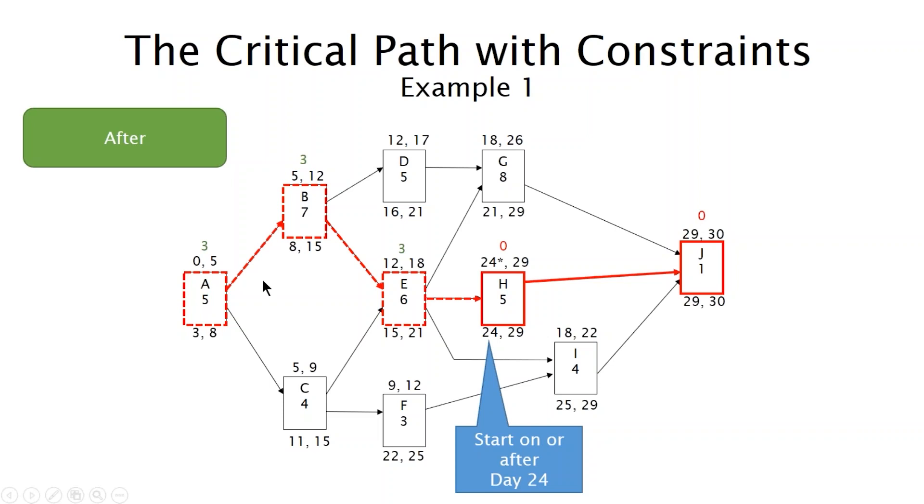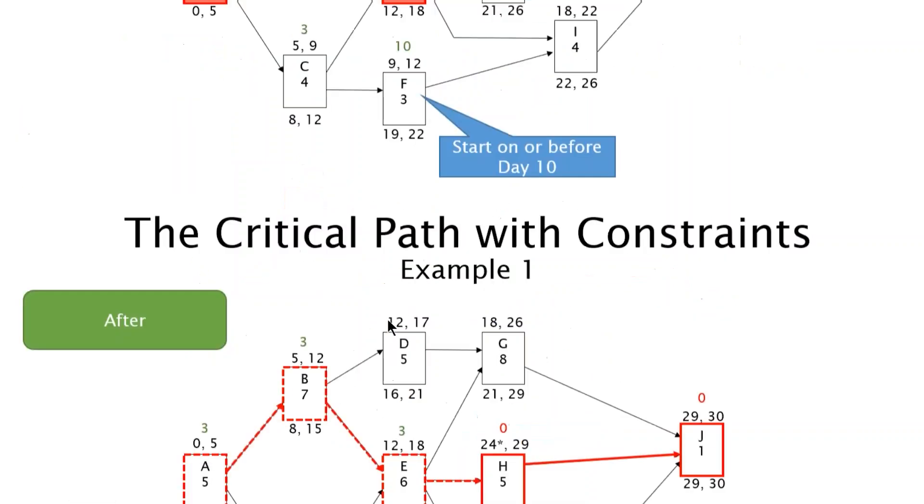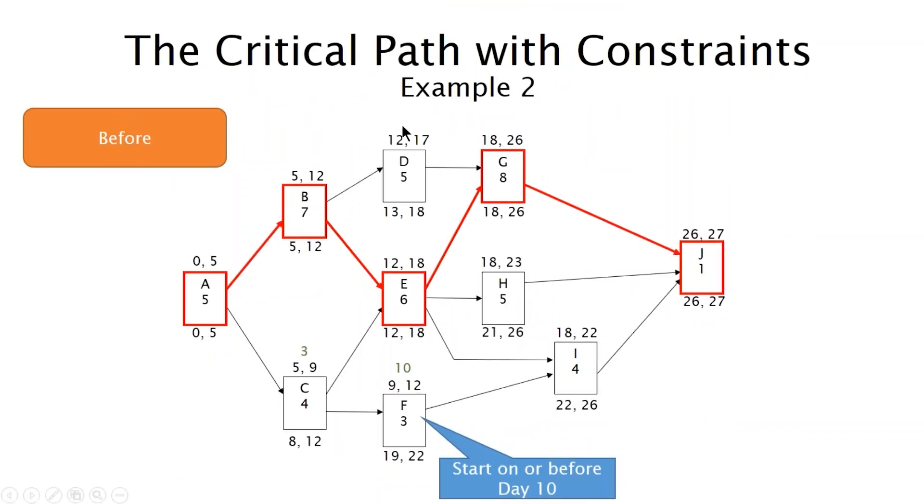Now let's look at, oh there we go, I have the total float values up there on the screen now. So 0, 0 for H and J. And A, B and E have positive three days. We'll do one more example, second example.